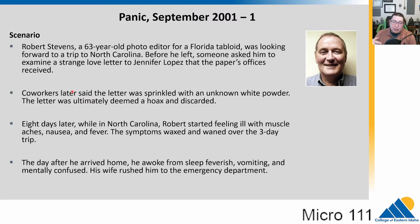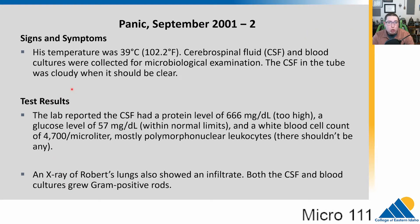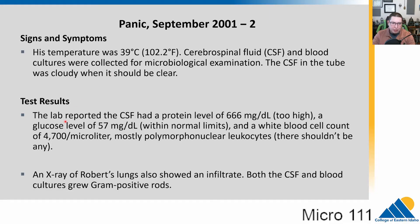Eight days later, while he's on vacation, he starts feeling ill — muscle aches, nausea, fever. The symptoms go up and down over his trip, which is very generic, so you don't think much of it. But when he gets home, he's feverish, vomiting, and has mental confusion, so his wife takes him to the ER. This is generally indicative of a larger-scale infection. His temperature is 102.2°F. Cerebrospinal fluid and blood are collected and examined for microbes. The CSF was cloudy when it should be clear, indicating some sort of infection of the cerebrospinal fluid.